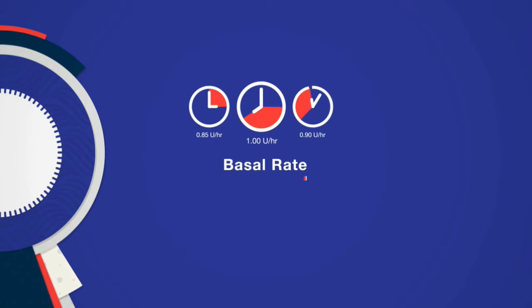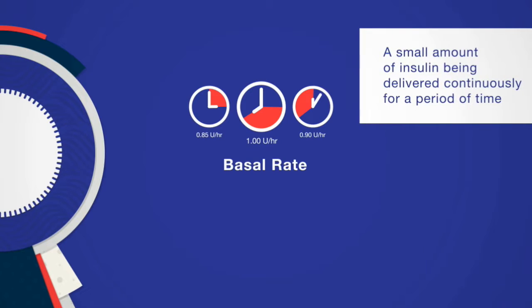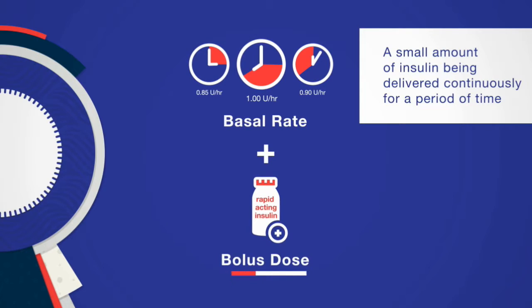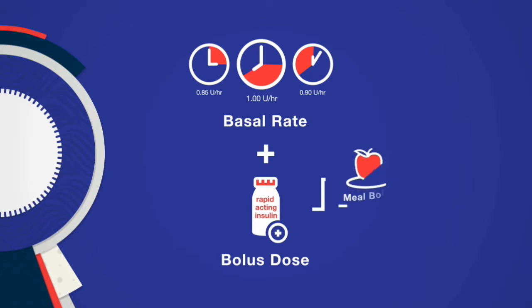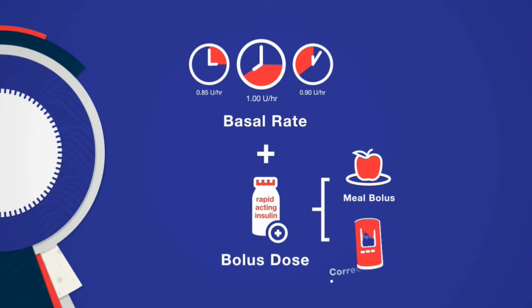Remember, the pancreas varies the amount of insulin it delivers because your body needs more or less insulin at different times. Along with basal insulin delivery, bolus doses are also needed to keep your blood glucose within an acceptable range. A bolus is an additional dose of insulin for meals and/or correcting a high blood glucose value. For example, you may need a meal bolus because you are about to eat a meal or snack that is likely to raise your blood glucose level. You may also need a correction bolus to reduce your blood glucose when it is above your target level.